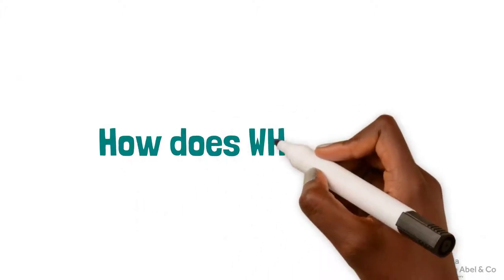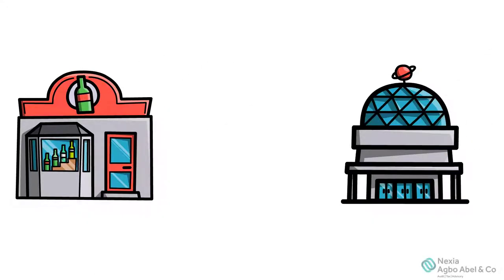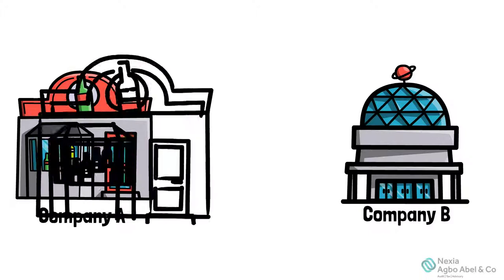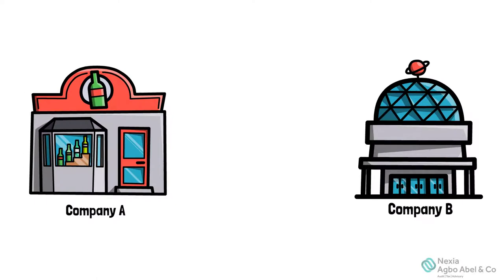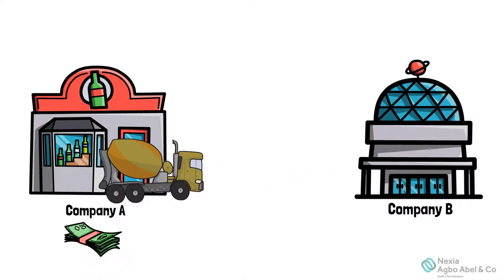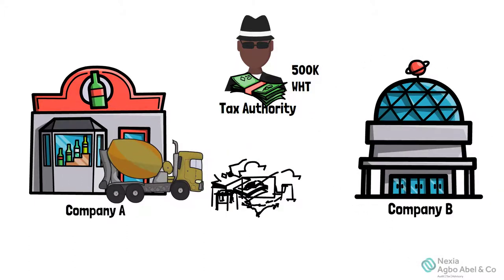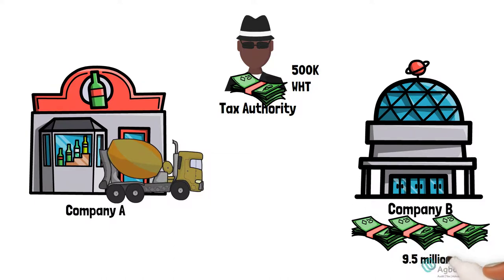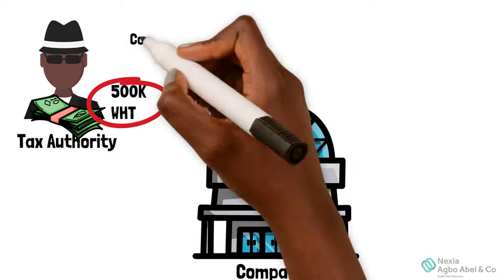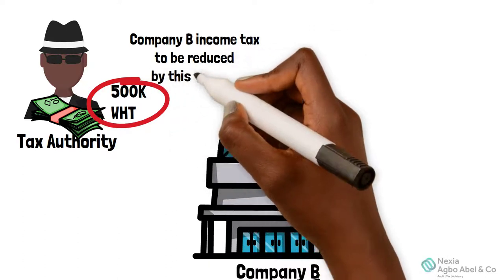How does withholding tax work? There are two companies: Company A and Company B. Company B gets a contract from Company A to supply building materials for 10 million naira. On completion of the transaction, Company A will withhold 500,000 naira, which is 5% of the contract sum, and remit that to the relevant tax authority as withholding tax. Company B will only be paid 9,500,000 naira. At the end of Company B's financial year, when they are paying their taxes, the 500,000 naira remitted as withholding tax on their behalf will be deducted from the total income taxes they have to pay.